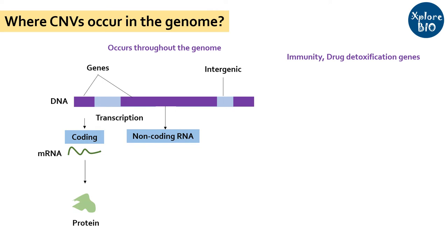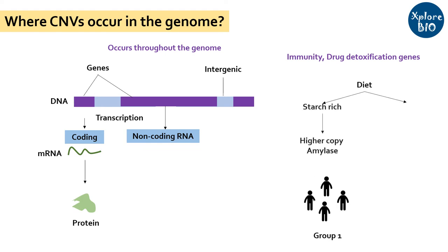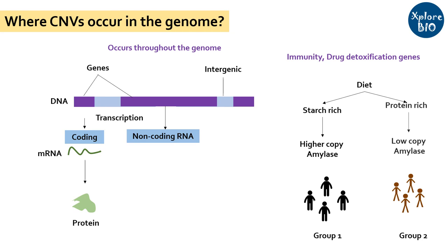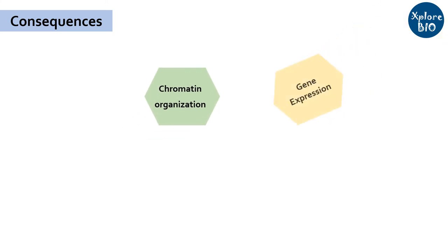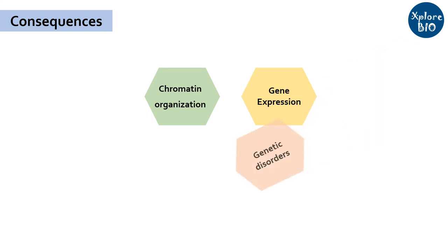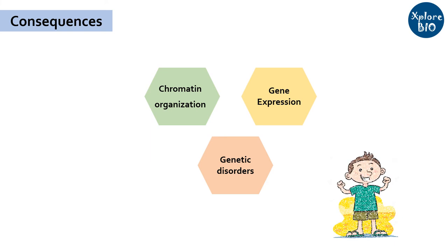CNVs can have huge consequences in an organism. An interesting example is that of copy number variation in the amylase gene of two different groups of people. Group 1 individuals who had a strong history of consuming more starchy food were having higher copies of the amylase gene compared to group 2 individuals who were consuming more protein-rich diets. Copy number variation can alter chromatin organization, or it can affect expression of a gene or nearby genes where the variation is occurring. Some CNVs can result in severe genetic disorders affecting the health of an individual.